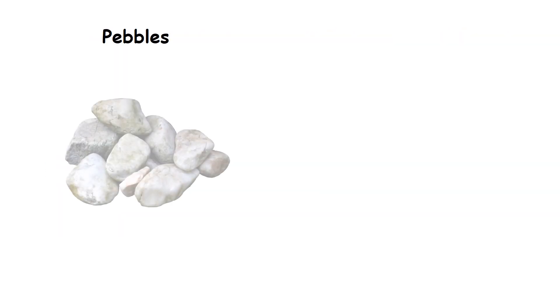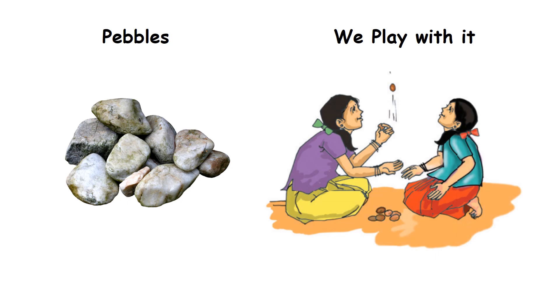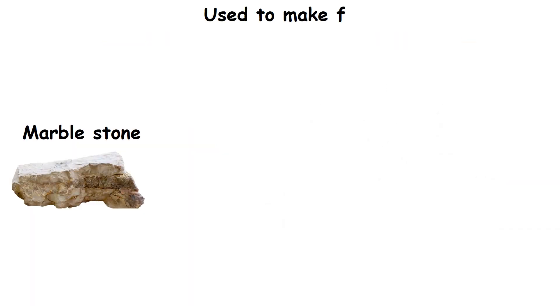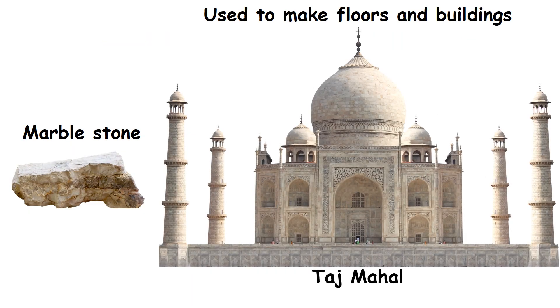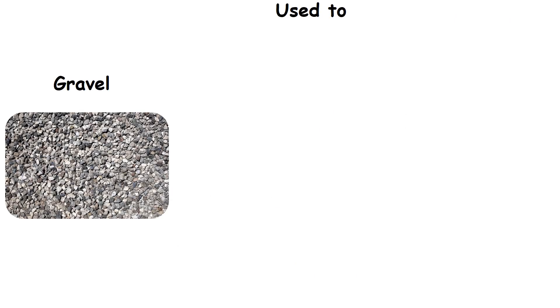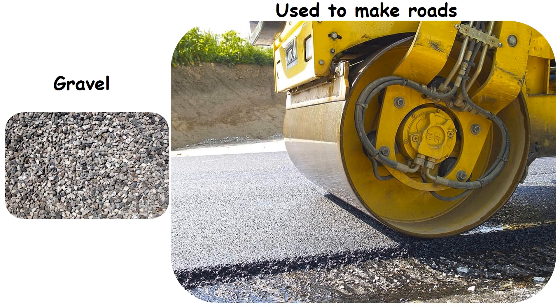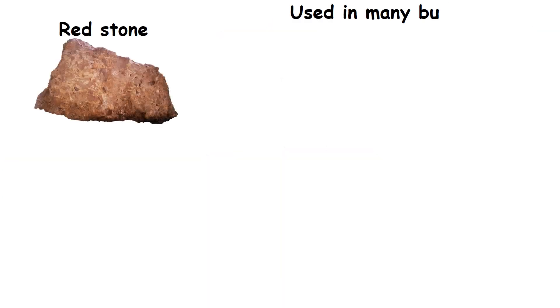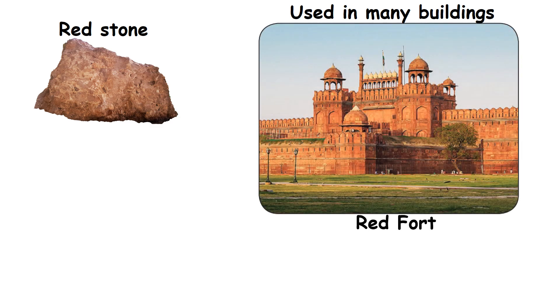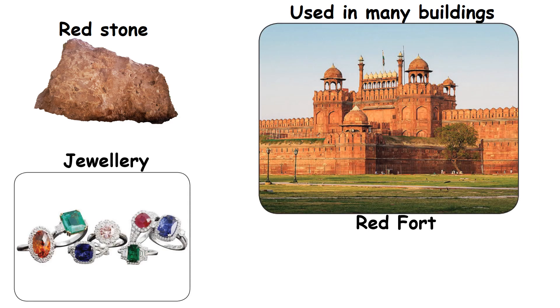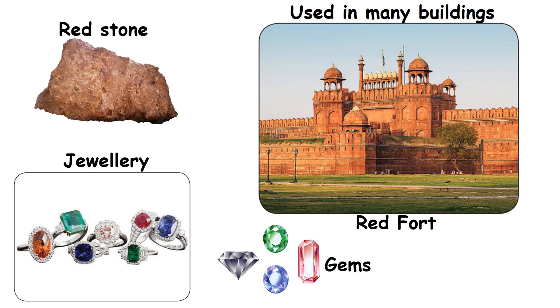Pebbles are a type of stone. We play with them. Marble stone is used to make floors and buildings — for example, the Taj Mahal. Small stones called gravel are used to make roads. Red stone is used in many buildings — for example, the Red Fort. We can make jewellery using precious stones called gems.